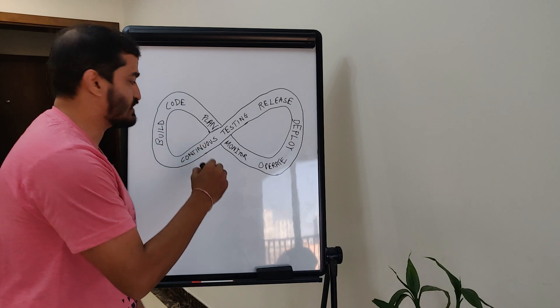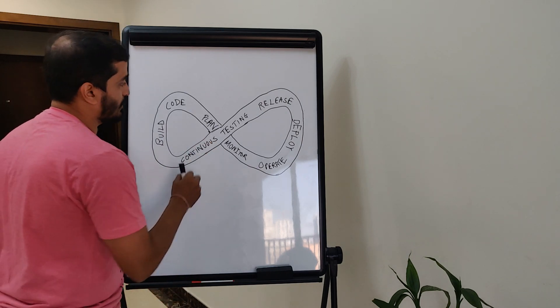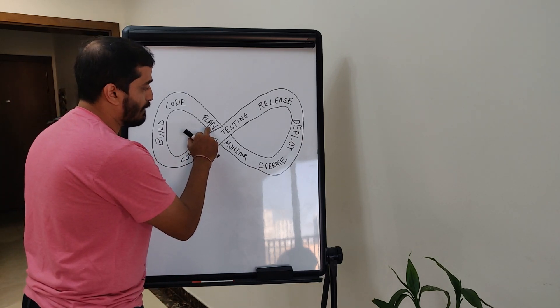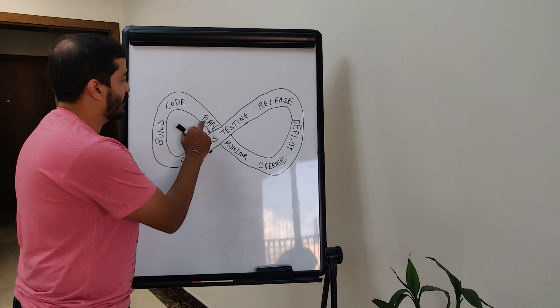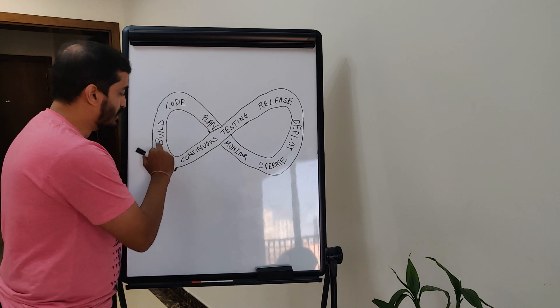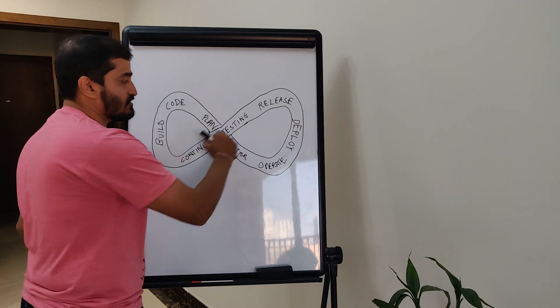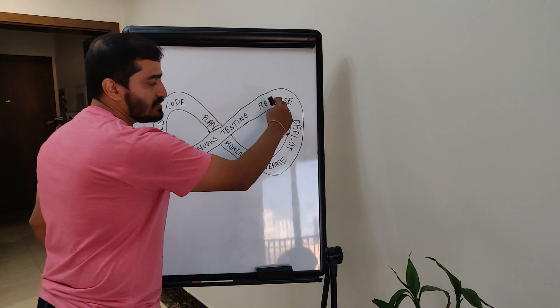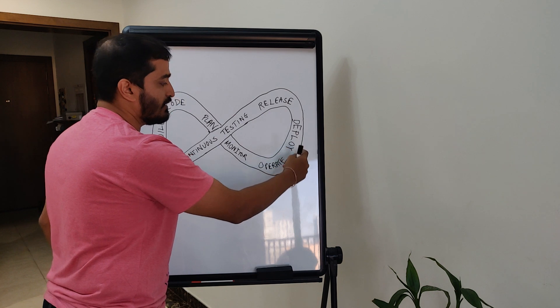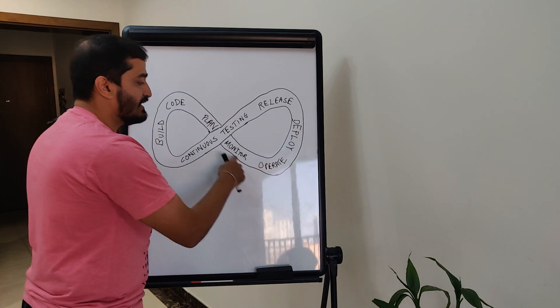Essentially, this is the full process where it starts from someone who plans a code as a developer, then moves to the code, builds the code, does proper testing for the code. This is the process of continuous testing. Then the code is released, then it's put into deployment, then it's operated, and then it's monitored.